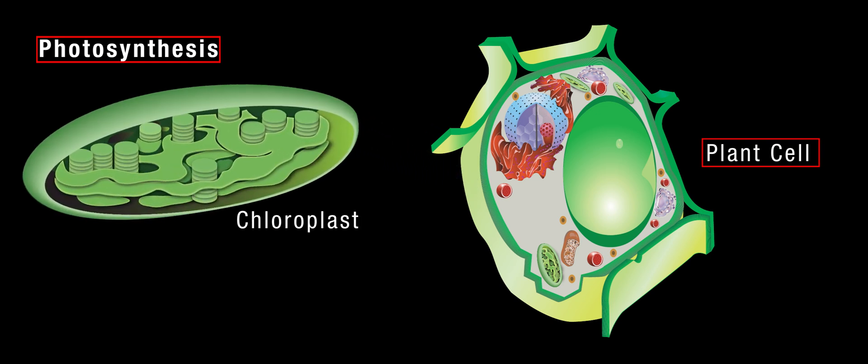During photosynthesis, six molecules of water combine with six molecules of carbon dioxide in the presence of sunlight to form one molecule of glucose and six molecules of oxygen.